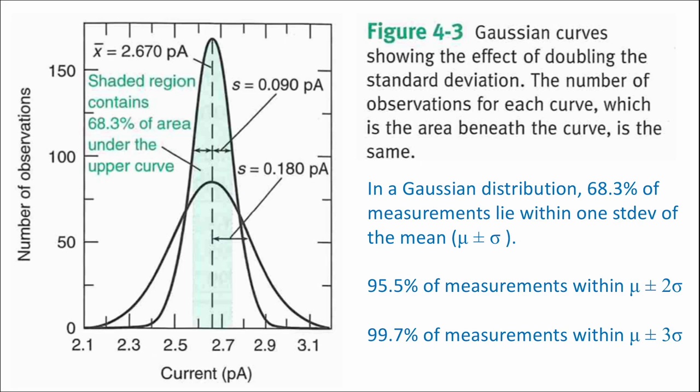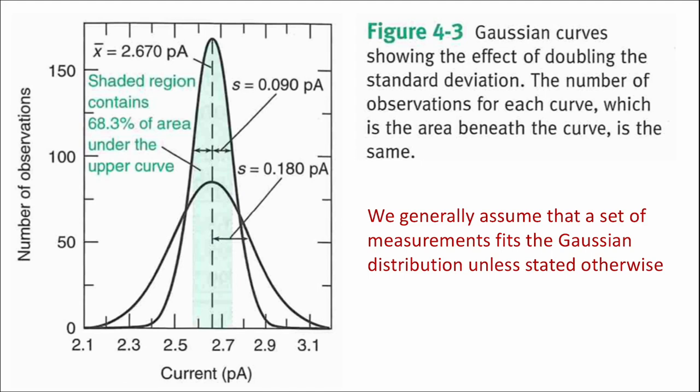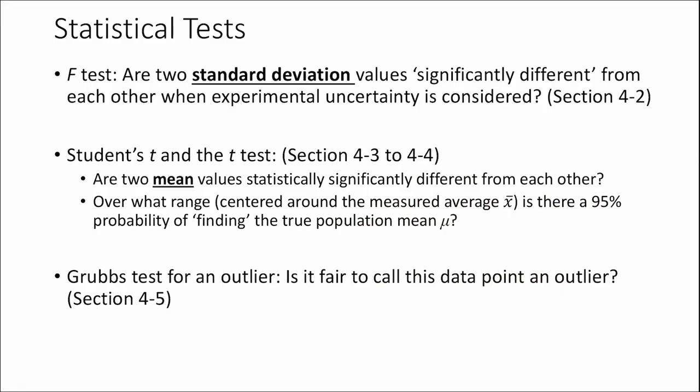If you wanted to go up to three standard deviations away from the mean, either above or below, you will encompass 99.7% of all measurements — if you're measuring something that follows the Gaussian distribution. Generally you can assume that a set of measurements is Gaussian, especially in this context, unless told otherwise. Now let's move into perhaps the new things. We're going to describe three different statistical tests and then a process to calculate a confidence interval.